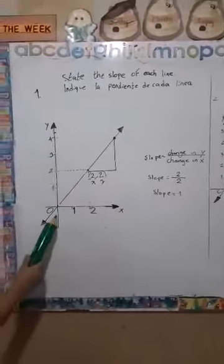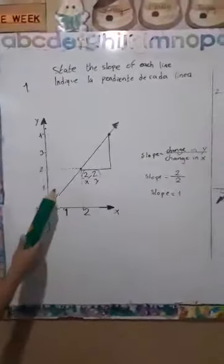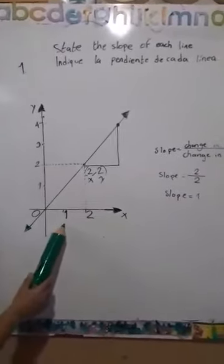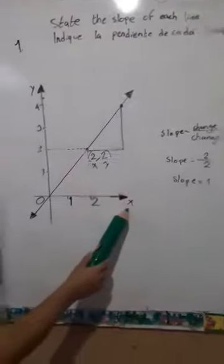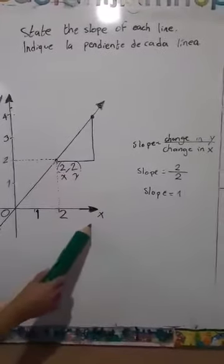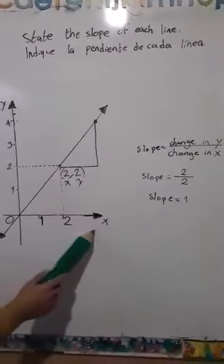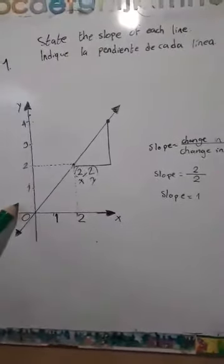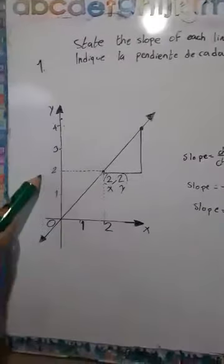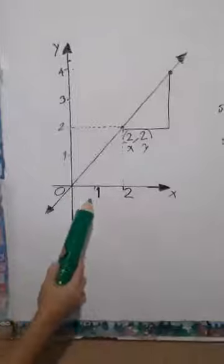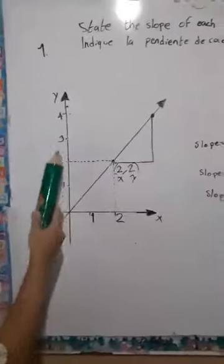Now we're going to analyze this graph. This graph represents the relationship between the numbers in the x-axis that are called the x-coordinates and the y-numbers in this plane. This is called the coordinate plane.